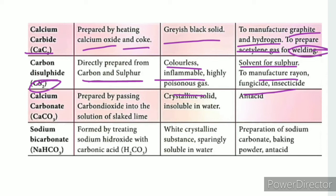Calcium carbonate has the formula CaCO3. It is a crystalline substance used in oil waste treatment. Calcium carbonate is insoluble in water.